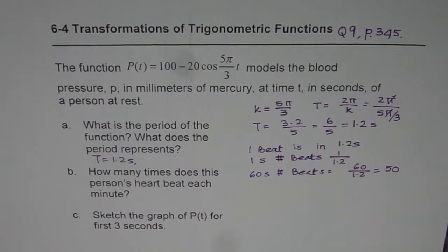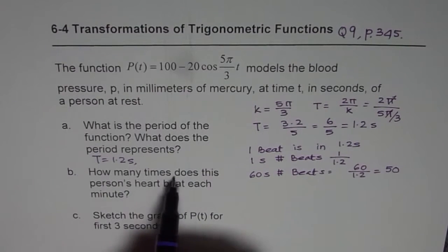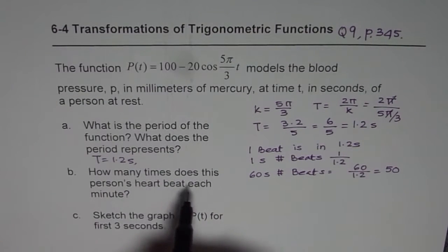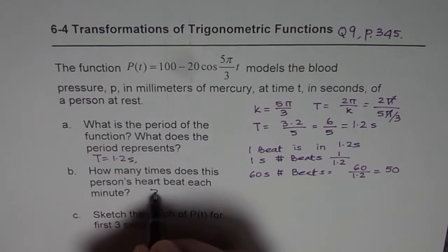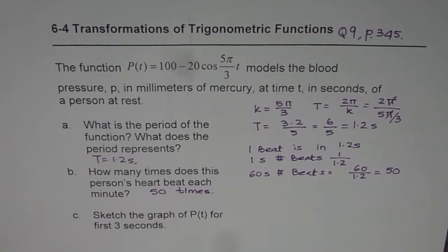So there are 50 beats in one minute for this particular person. When it says, how many times does this person's heart beat each minute, it will be 50 times.